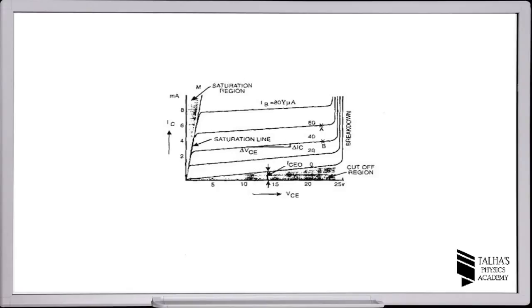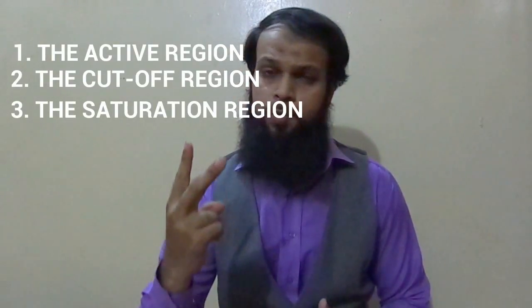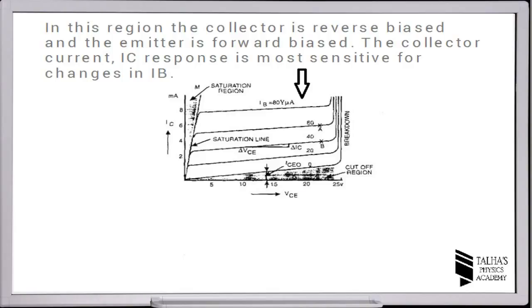The output characteristics are divided into three regions: number one, the active region; number two, the cutoff region; and number three, the saturation region. In the active region, the collector is reverse biased and the emitter is forward biased. The collector current IC response is most sensitive to changes in the base current.